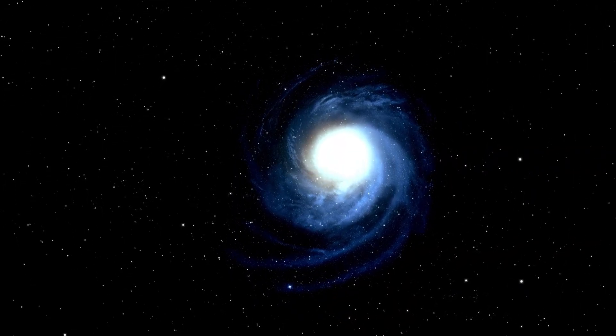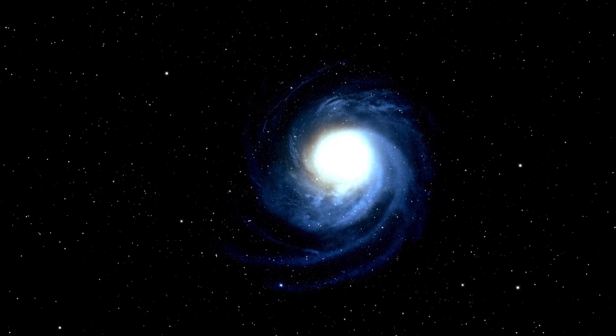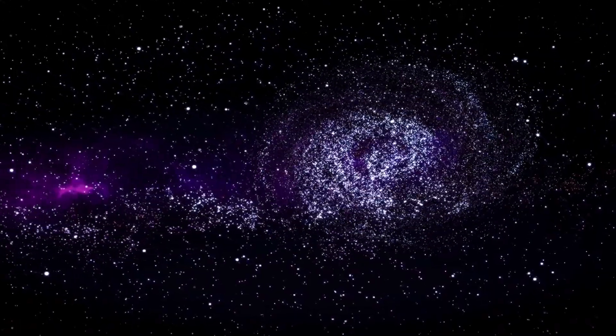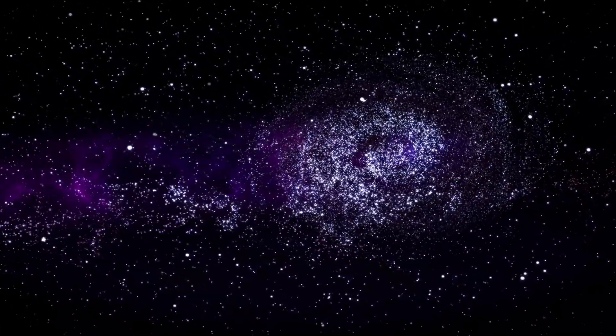The concept behind Breakthrough Starshot is as ambitious as it is revolutionary. The plan involves launching thousands of tiny spacecraft, each about the size of a postage stamp, into space. These starships will be propelled by powerful lasers, reaching speeds of up to 20% of the speed of light. The goal is to send the spacecraft on a decades-long journey to Proxima Centauri, where they could send back data about the star system and its planets, including Proxima b.